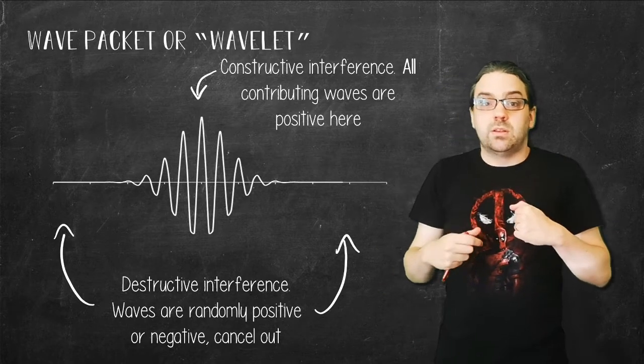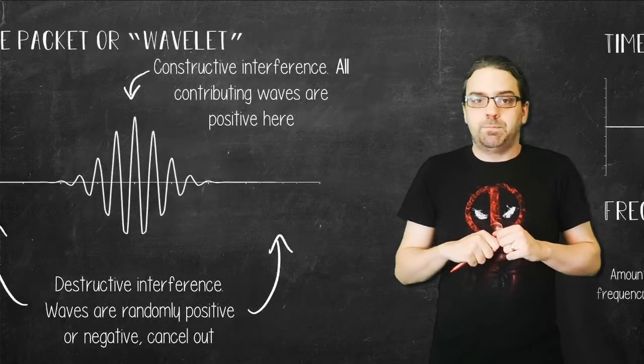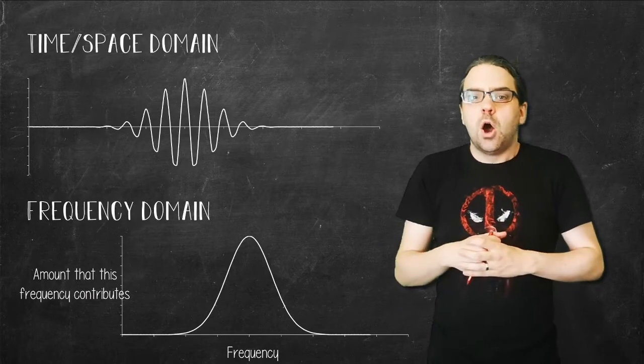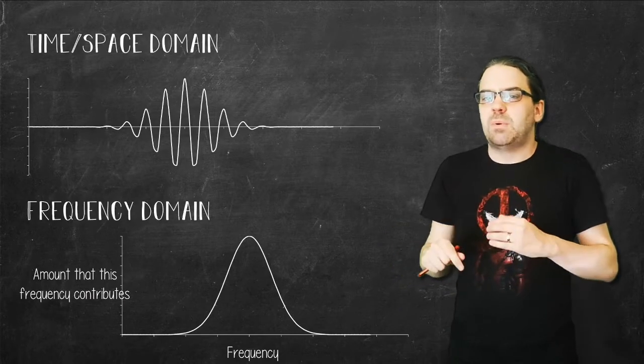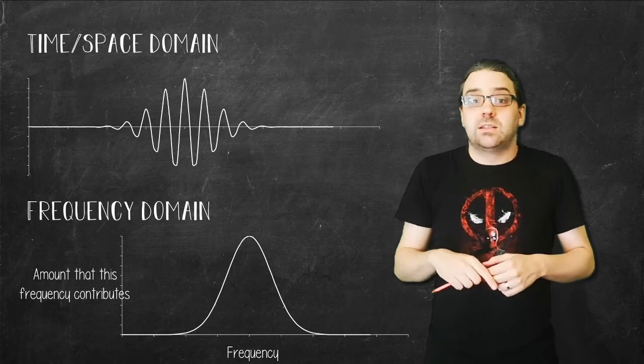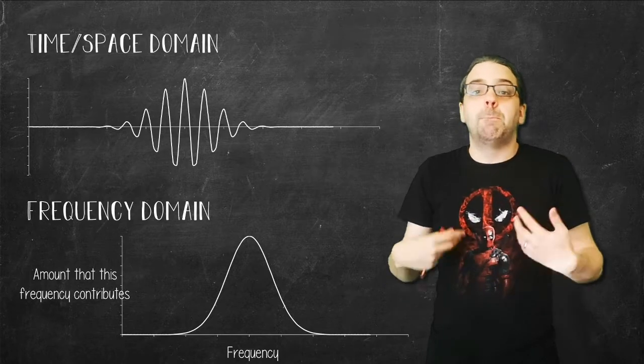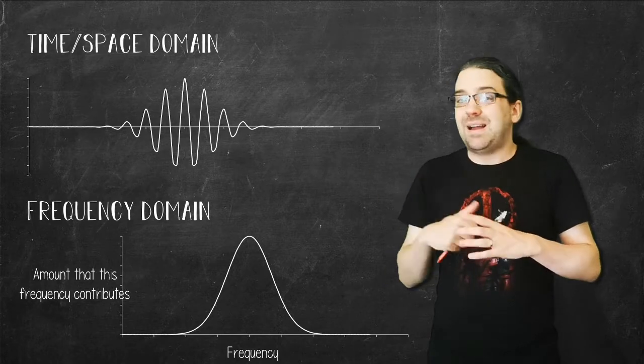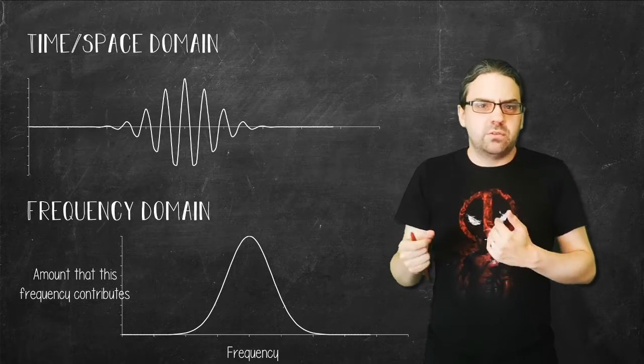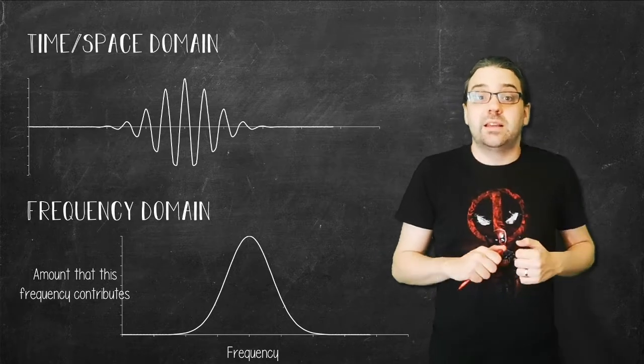So this conversion between the space and frequency domains is known as a Fourier transform. Now, you don't need to know the detail for this course, but a Fourier transform saves us from having to think about adding multiple sine waves together, as it simply plots the frequency of each wave versus the amount that they contribute to the wave packet. For some more nuts and bolts on this, I would definitely recommend Grant Sanderson's videos on it, with the links below.